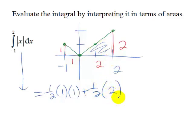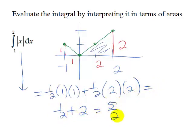which is one half the base times the height. So it looks like we've got one half plus two, which is five halves.